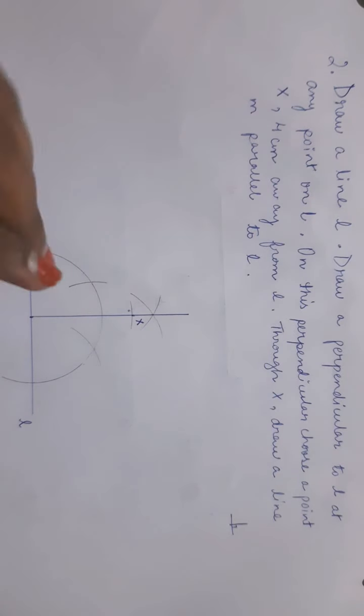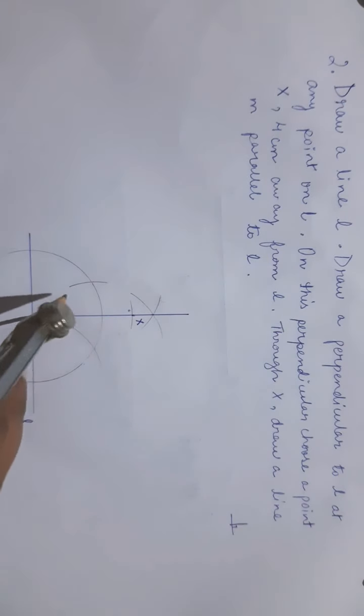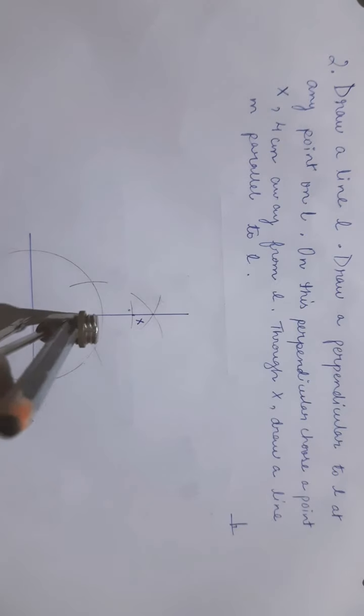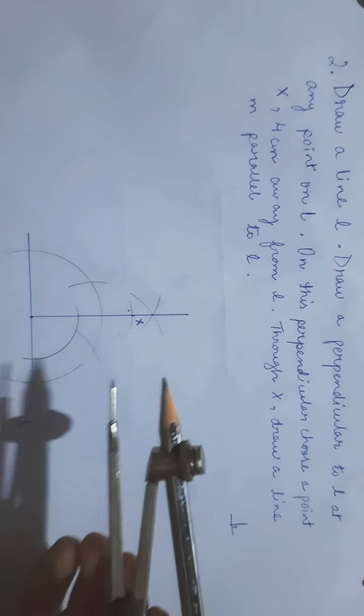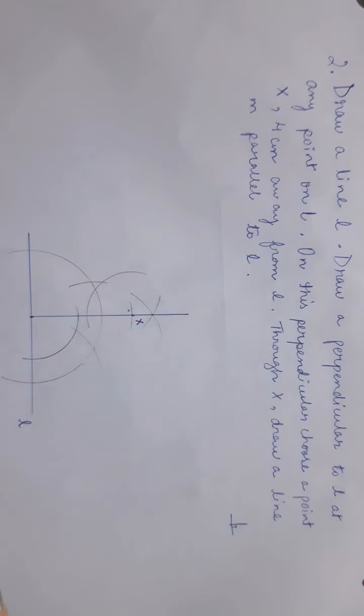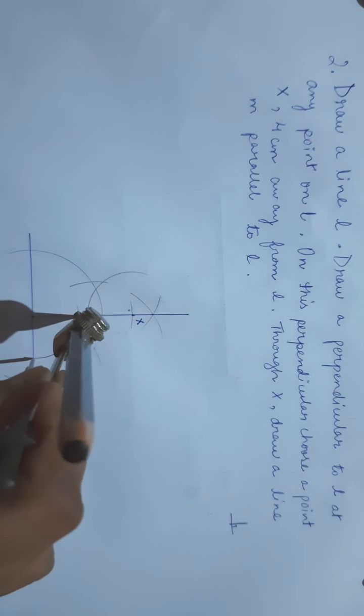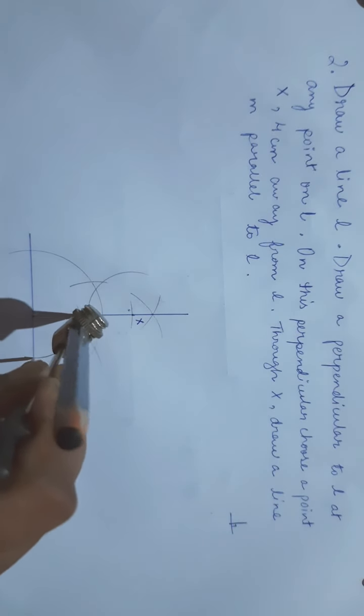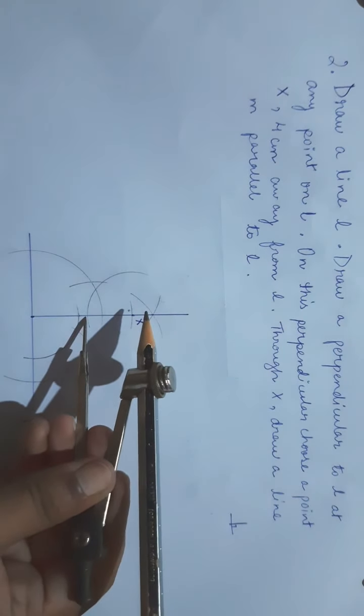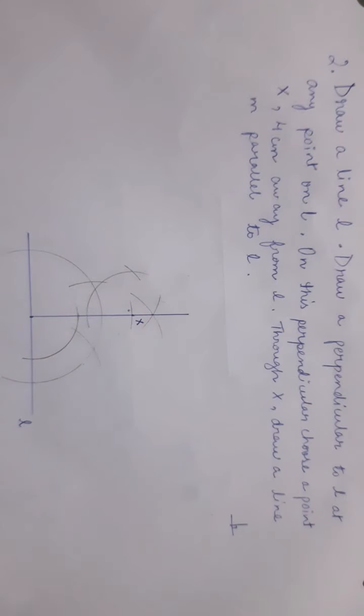Now you have to draw a parallel line. The process is exactly the same: take any convenient radius. Draw an arc, then taking the same radius and taking this point, draw another arc. Now measure this arc, and taking the same measurement from here, draw another arc. Then join this point and this point.